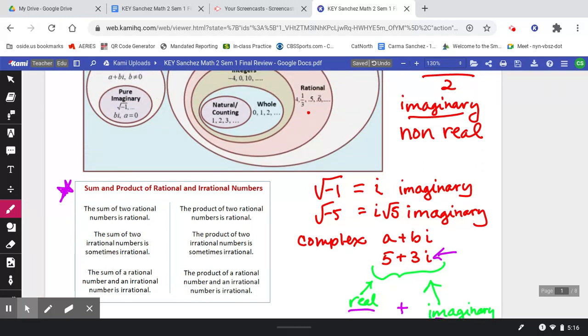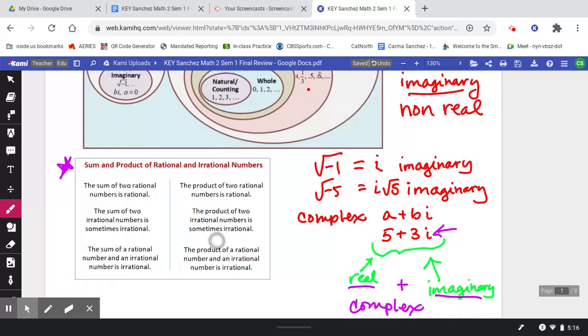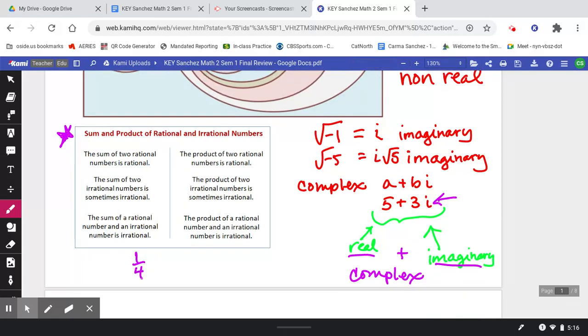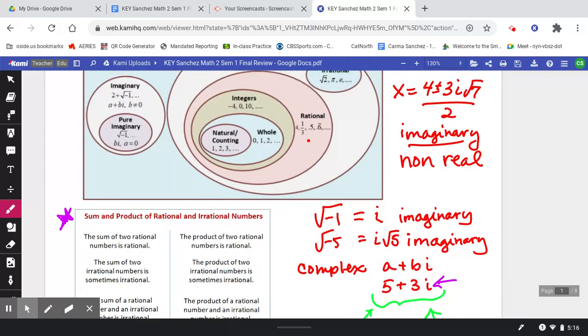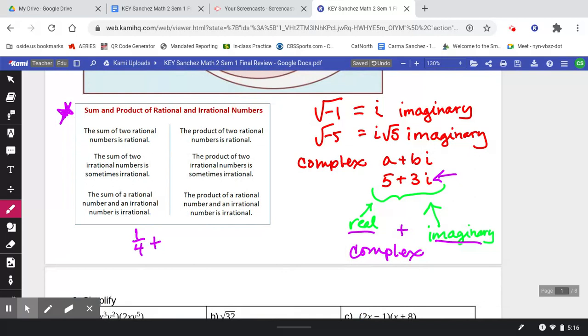So, for example, if I take a rational number like 1/4, and I add it to 1/2, and I combine this, it would make 3/4. Here's a rational number plus another rational number that gives me a rational number. So this represents the first bullet point.